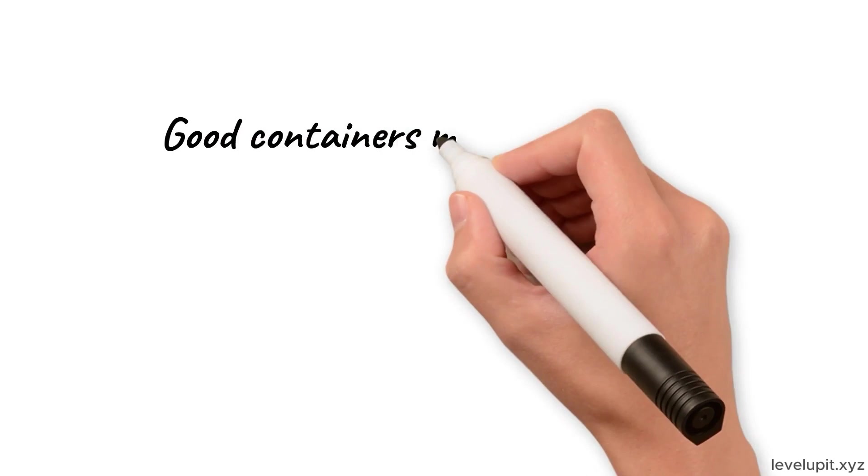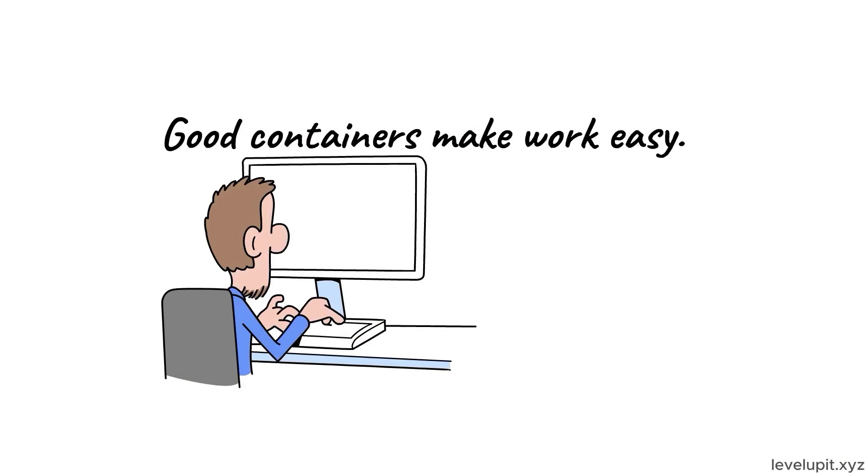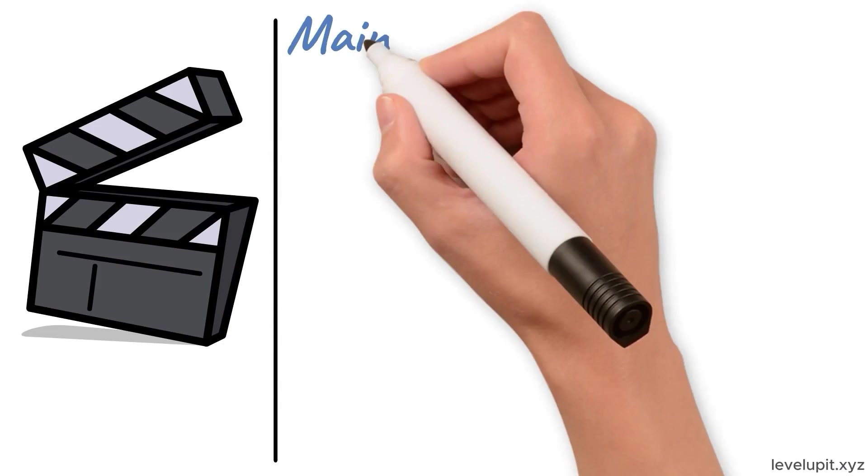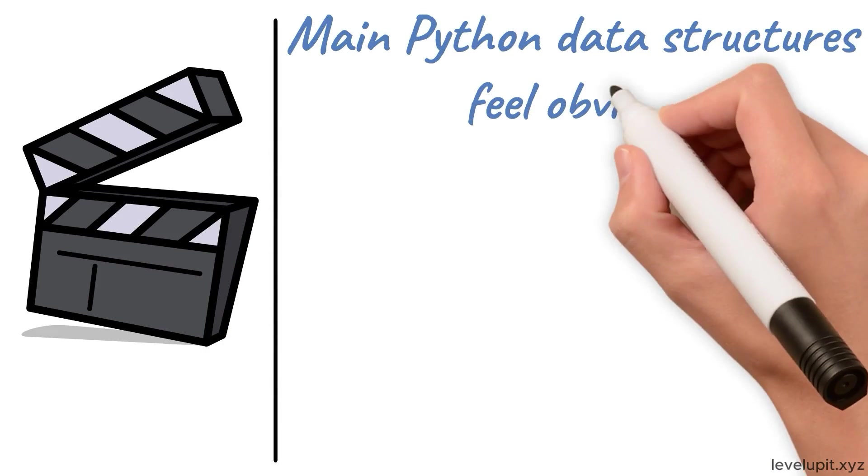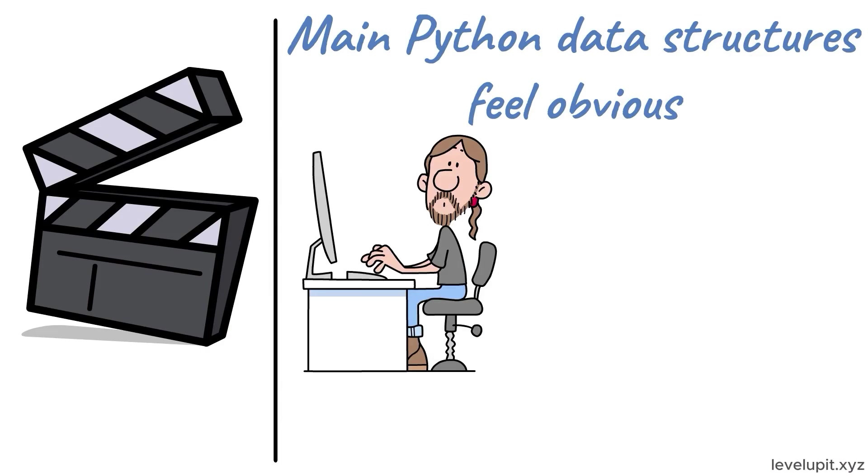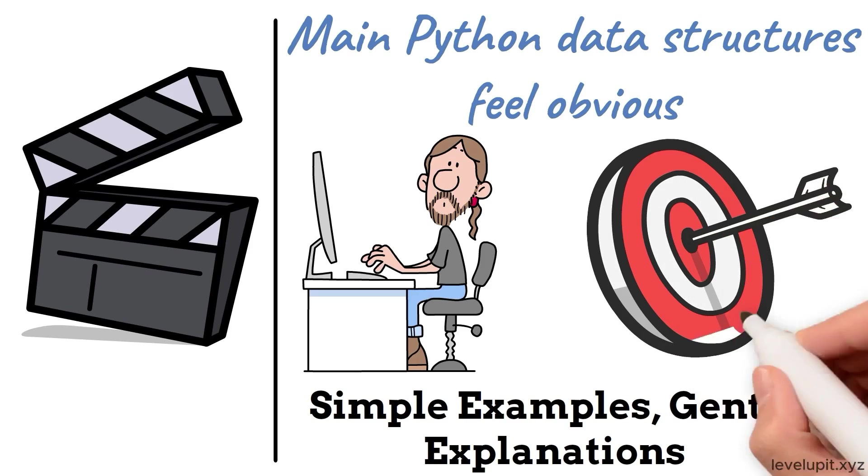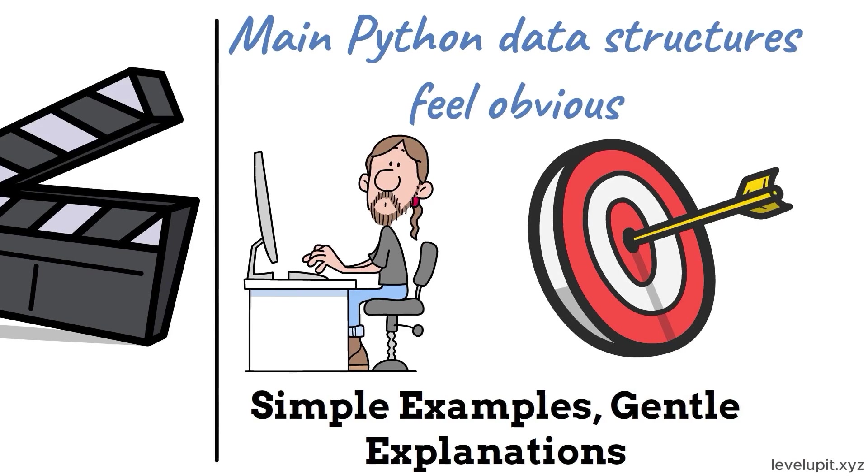The quiet difference is the choice of data structures. Good containers make work easy, poor choices slow everything down. In this session, the goal is to make the main Python data structures feel obvious to use in daily work with simple examples, gentle explanations, and a focus on what to pick and why. We'll keep it friendly, keep it visual, and keep it practical.